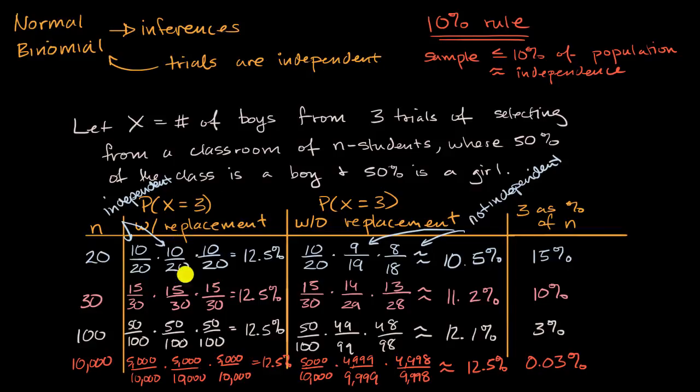So in all of the cases where you have independent trials, and 50% of the population is boys, 50% is girls, well you're going to amount to one half times one half times one half. So in all of those situations, you have a 12.5% chance that X is going to be equal to three. And in this case, X would be a binomial variable.